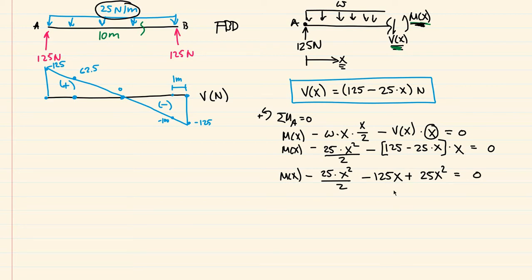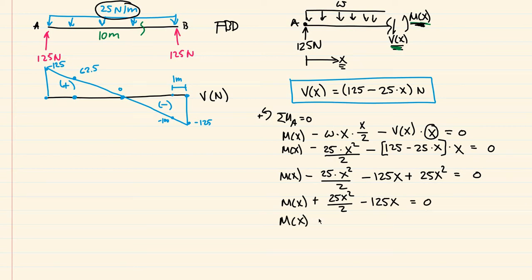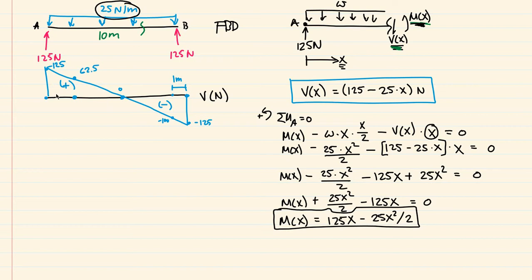Combining like terms: negative 25x² over 2 plus 25x² gives positive 25x² over 2. So m(x) plus 25x² over 2 minus 125x equals zero. Solving for m(x), we get m(x) = 125x minus 25x² over 2. That is our moment equation representing the internal moments for this span, in units of newton-meters.